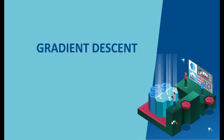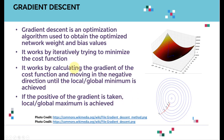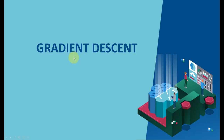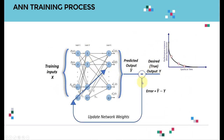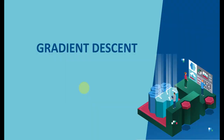Hello everyone and welcome to this lecture. We are going to cover the gradient descent algorithm. Gradient descent is an optimization algorithm used to obtain optimized network weights and bias values. From the previous lecture, to train the artificial neural network we use training data — inputs, desired outputs — the network generates predictions, we calculate the error signal, and then the problem is: how can we use that error signal to go back and update the weights? That's the magic of gradient descent.